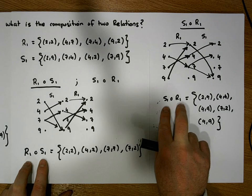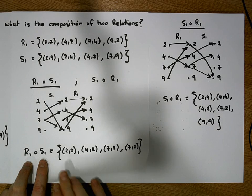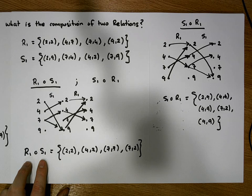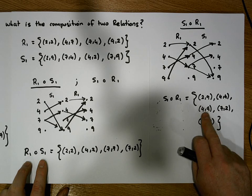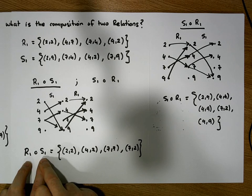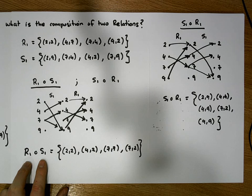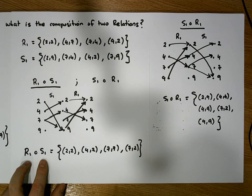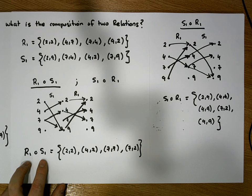So we've constructed R1 after S1 and S1 after R1. From a cardinality perspective, R1 after S1 has four elements and S1 after R1 has five. An important takeaway is that it is not necessarily the case that R after S equals S after R. This was Jonathan Lambert with the Mathematics Development and Support Service at the National College of Ireland — I hope this video was informative. Thank you.